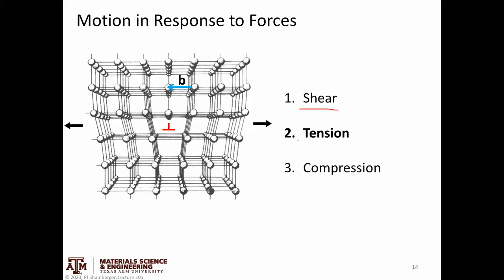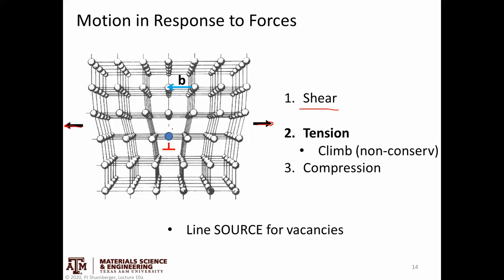If the lattice is in tension — being pulled apart — the only way to accommodate that tension would be to rip the two layers apart, potentially by moving the dislocation downward and extending the extra half plane down one more row of atoms, letting the lattice be pulled apart a little.